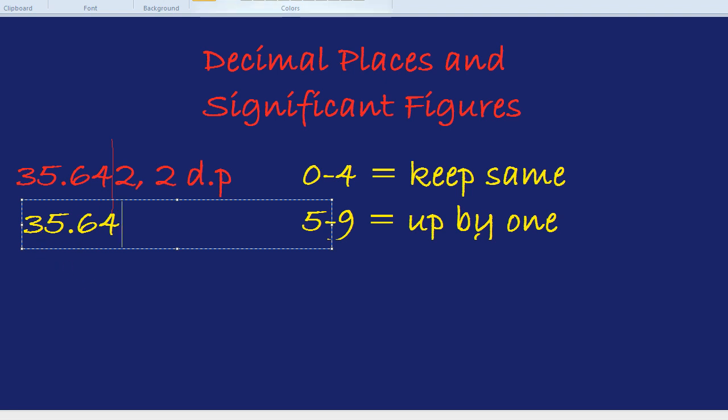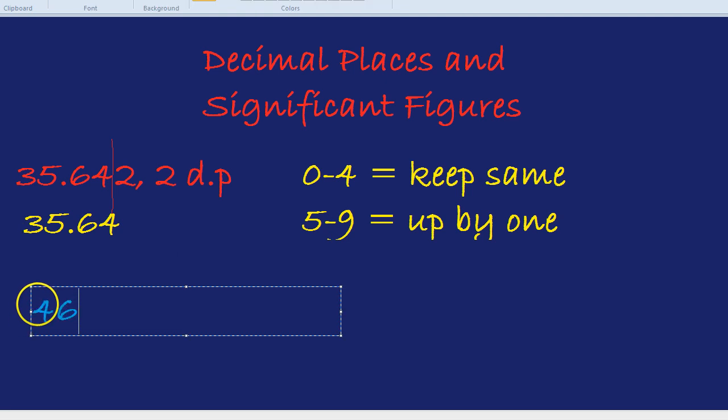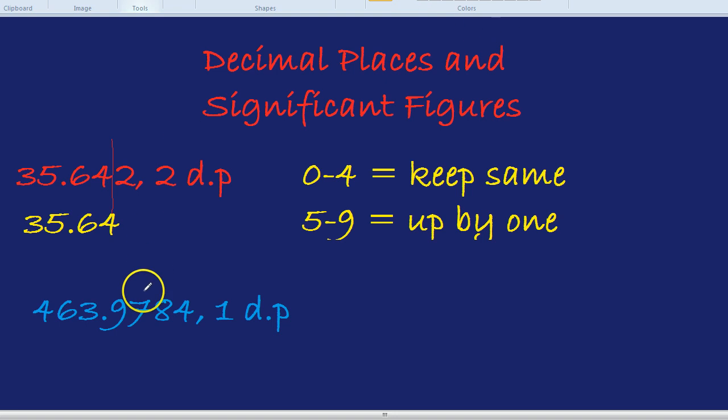Let's quickly try that again with a bigger number. How about 463.9784. Now we want that to 1 decimal place. 1 DP. 1 place after that dot. That is very stingy. So we're going to draw the line here.